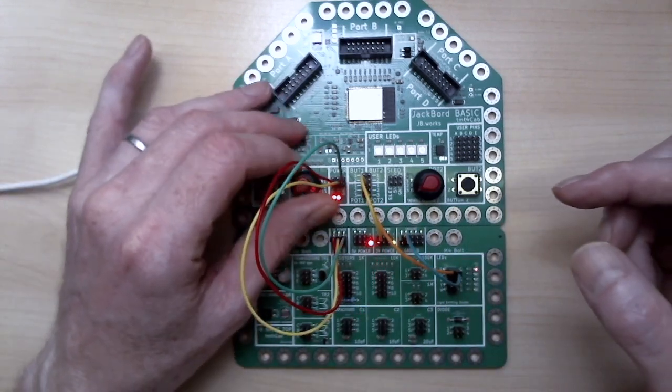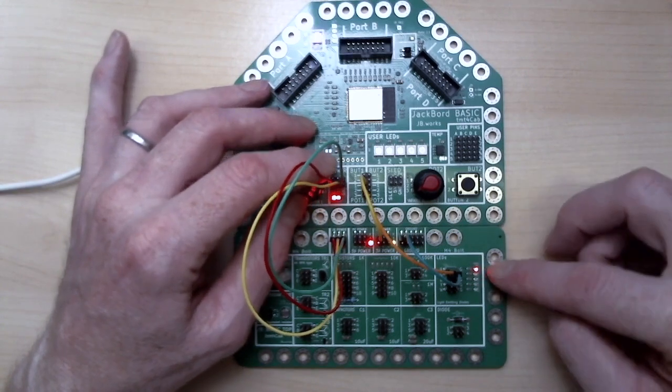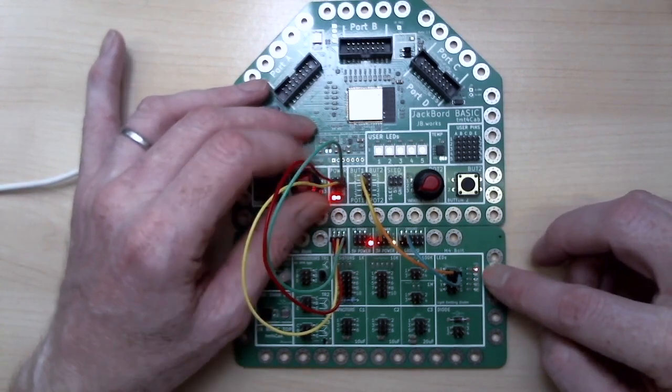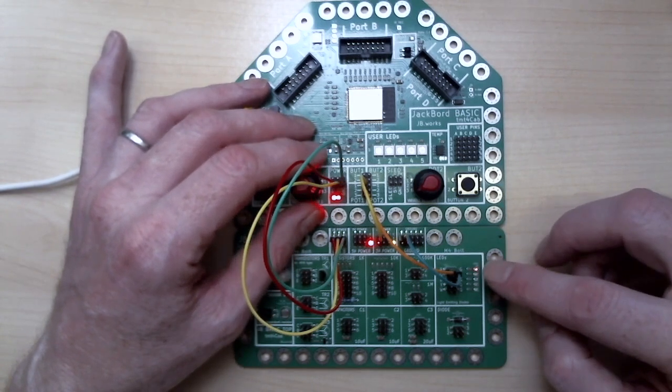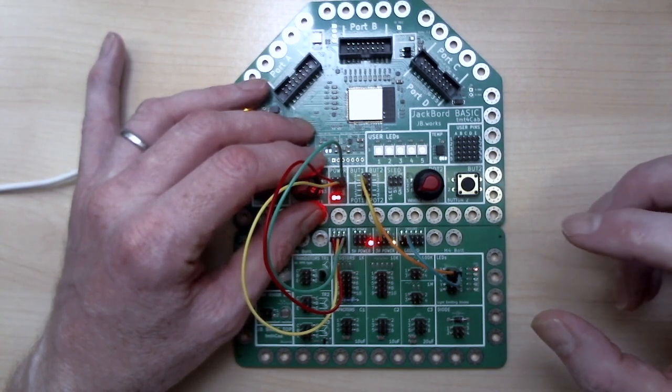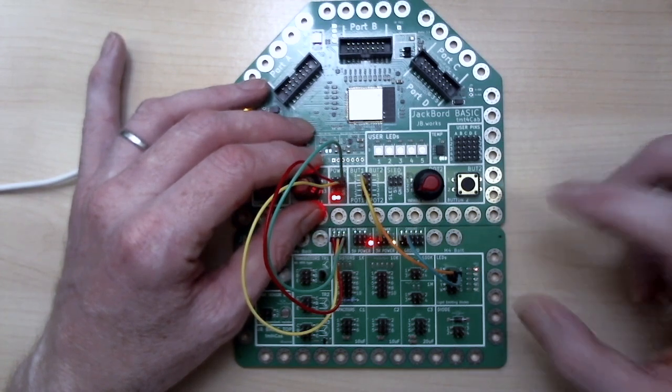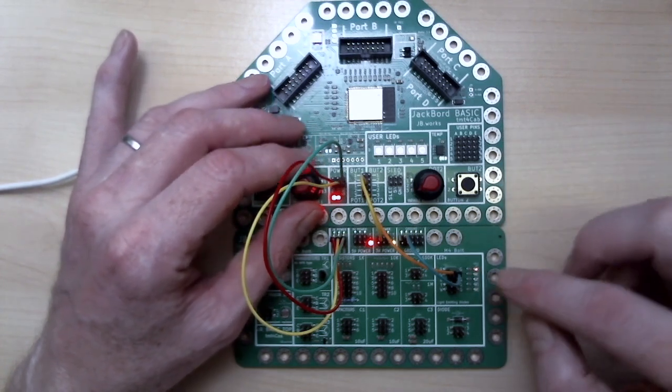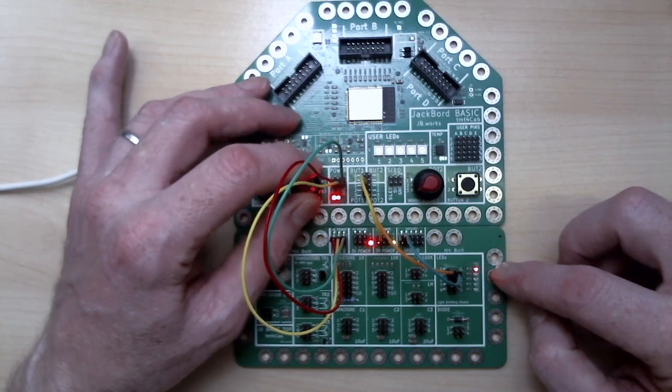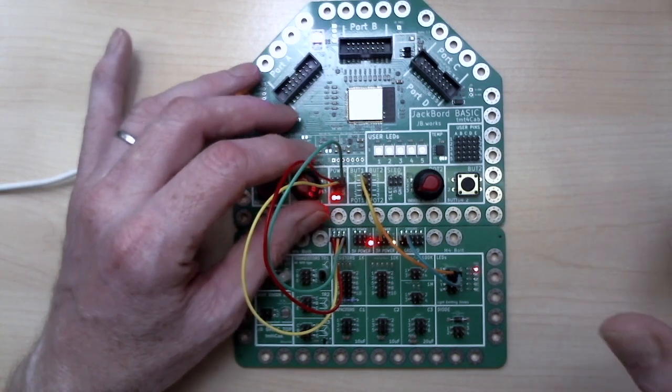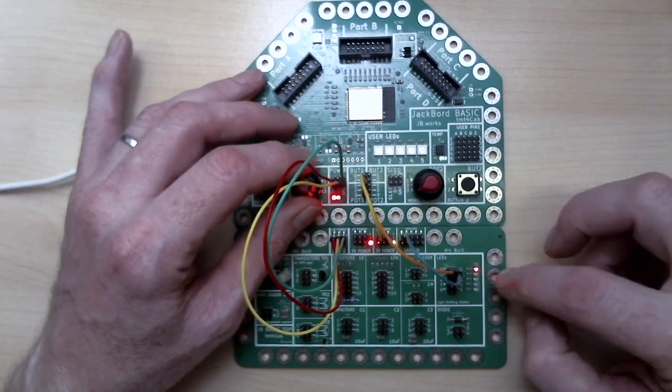Now as I turn the variable resistor you can see the brightness of the LED changing. So when I've got it anti-clockwise and the LED is at its dimmest we have the maximum amount of resistive track material between the LED and the power and then as I turn it clockwise I'm reducing the amount of resistive material therefore dropping the resistance and so the LED gets brighter.